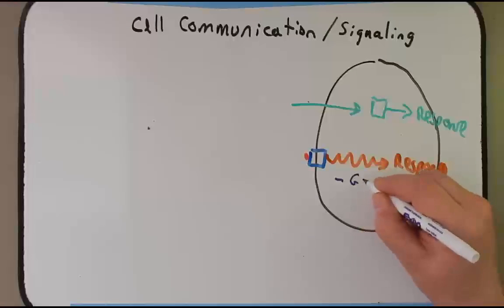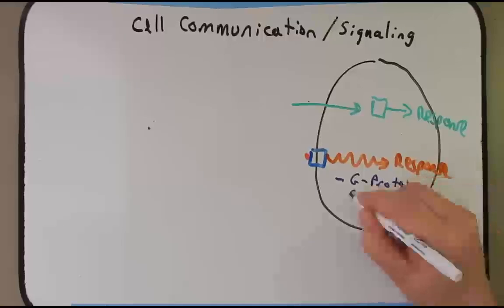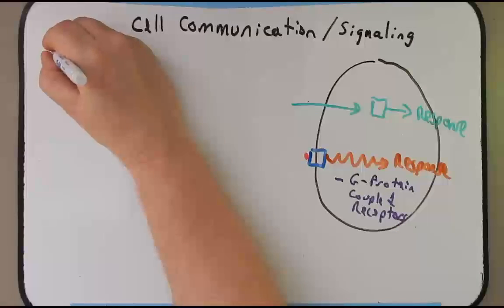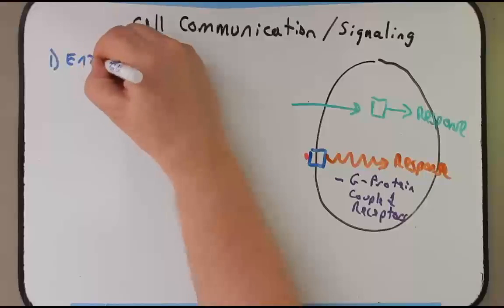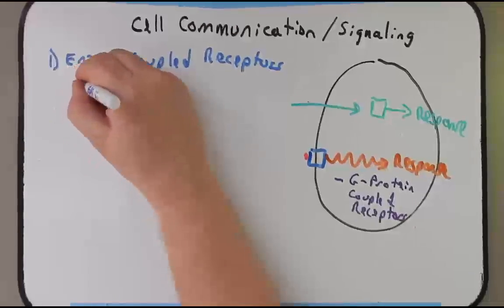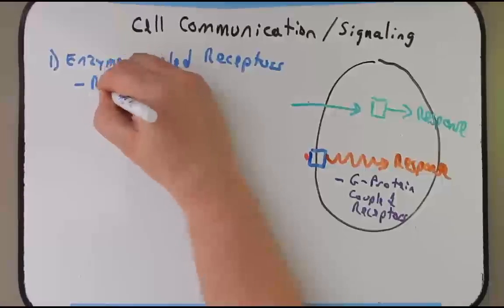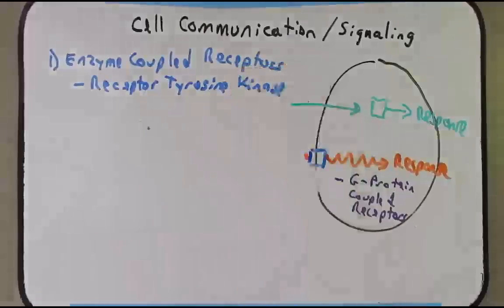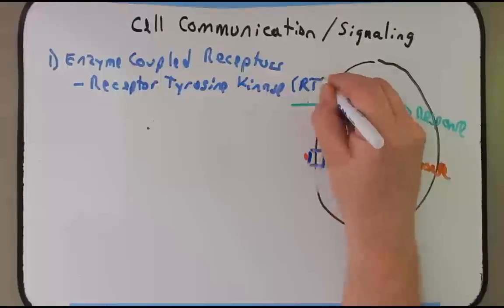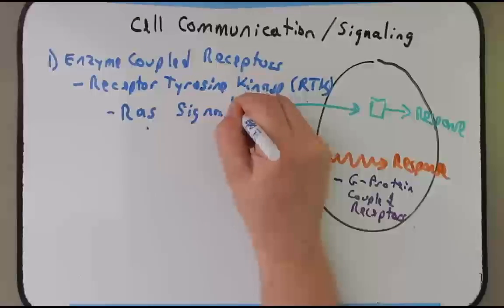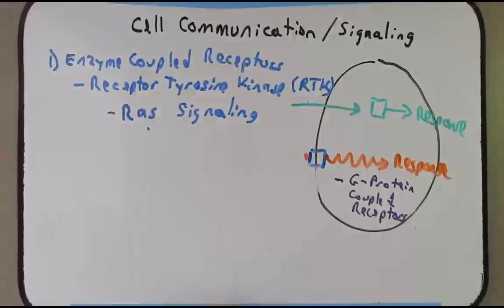As an example, we spent most of our time talking about G protein coupled receptors. In this podcast we're going to talk primarily about enzyme coupled receptors, and in doing so we're going to talk primarily about receptor tyrosine kinases, which we often abbreviate as RTK. We'll also talk about a very specific pathway called RAS signaling — a very important pathway that's linked to the health of a cell, and when it goes wrong, it's linked to things like cancer.